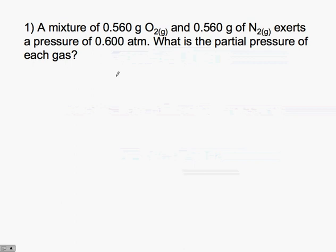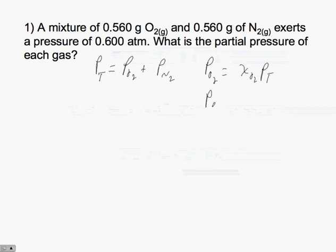The first thing you need to do is know the equations we're dealing with in terms of partial pressure. We know that the total pressure is equal to the pressure of oxygen plus the pressure of nitrogen. We also know that the pressure of oxygen equals the mole fraction of oxygen times the total pressure, and the pressure of nitrogen equals the mole fraction of nitrogen times the total pressure. The mole fraction of A is equal to the moles of A over the total number of moles.